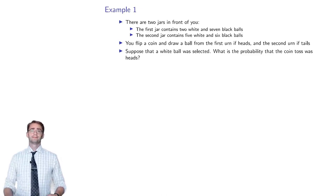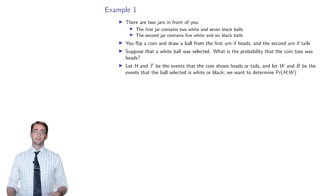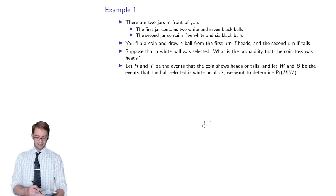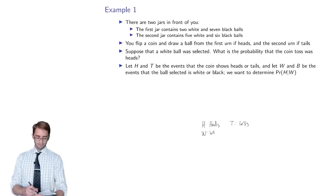The best way to approach these problems is to begin by writing down all of the events that could be of interest to you. In this case, H and T are the events that you flip heads or tails. H will be the event that you have heads, T will be the event that you have tails. W will be the event that you have a white ball, and B will be the event that you pull out a black ball.